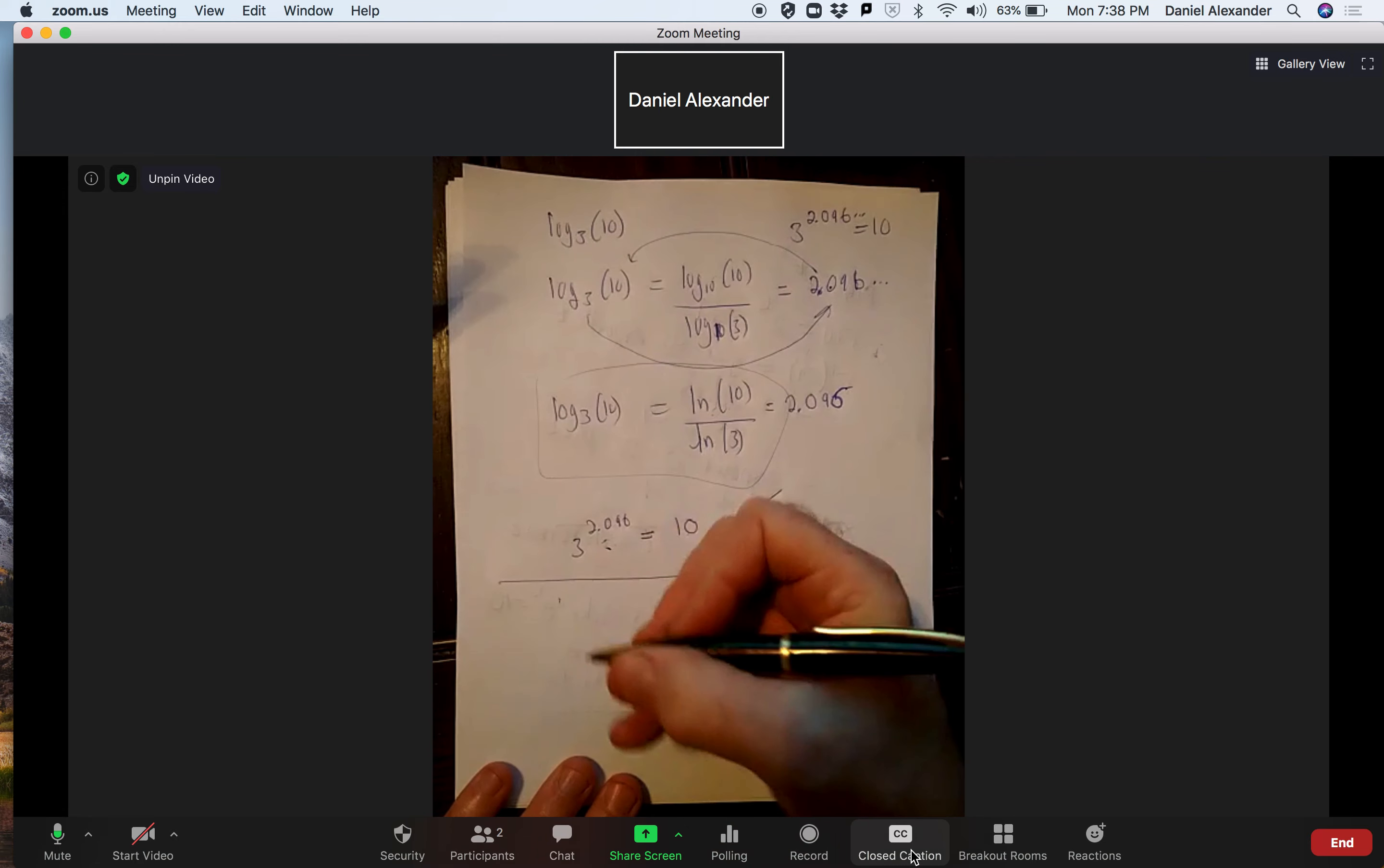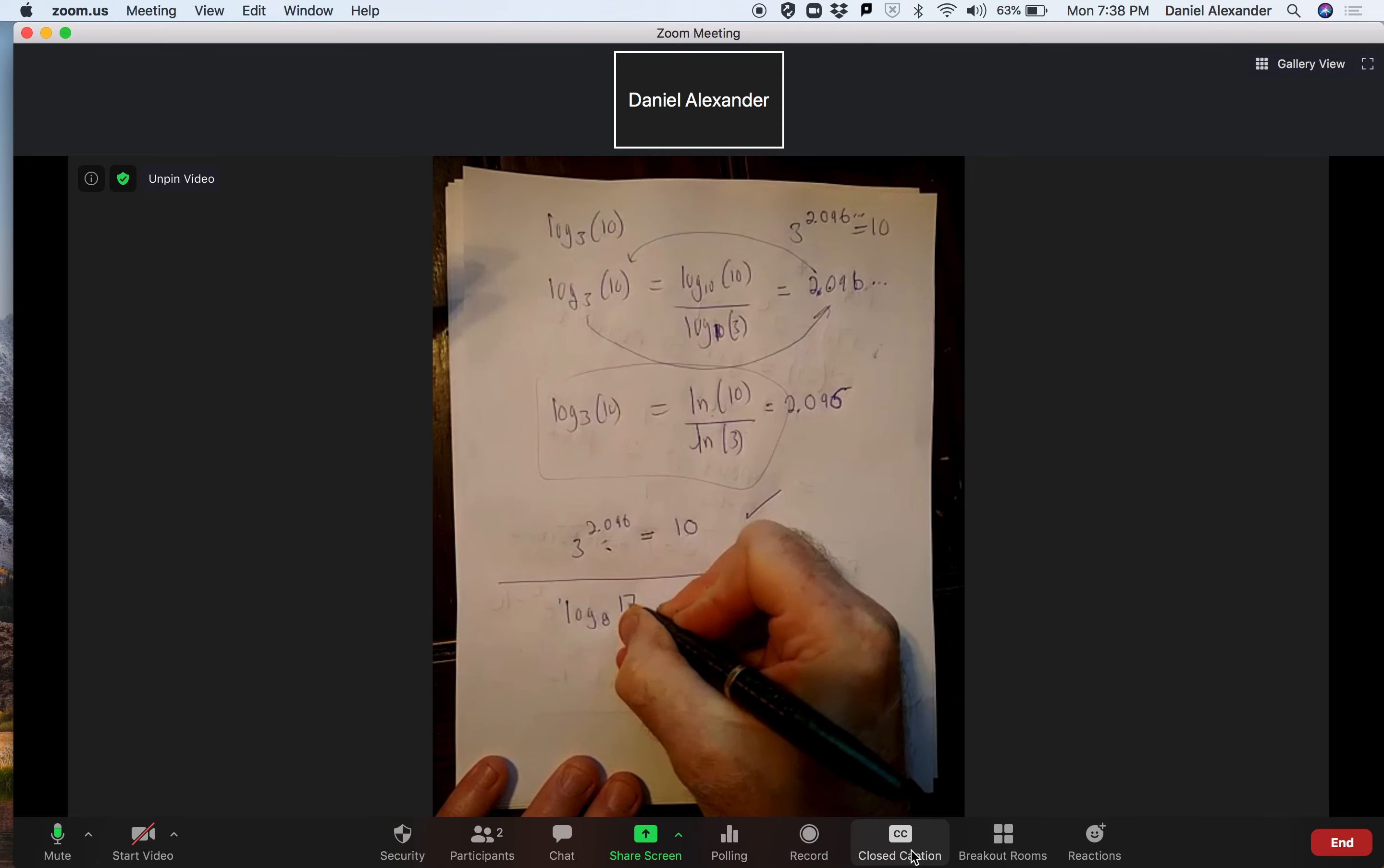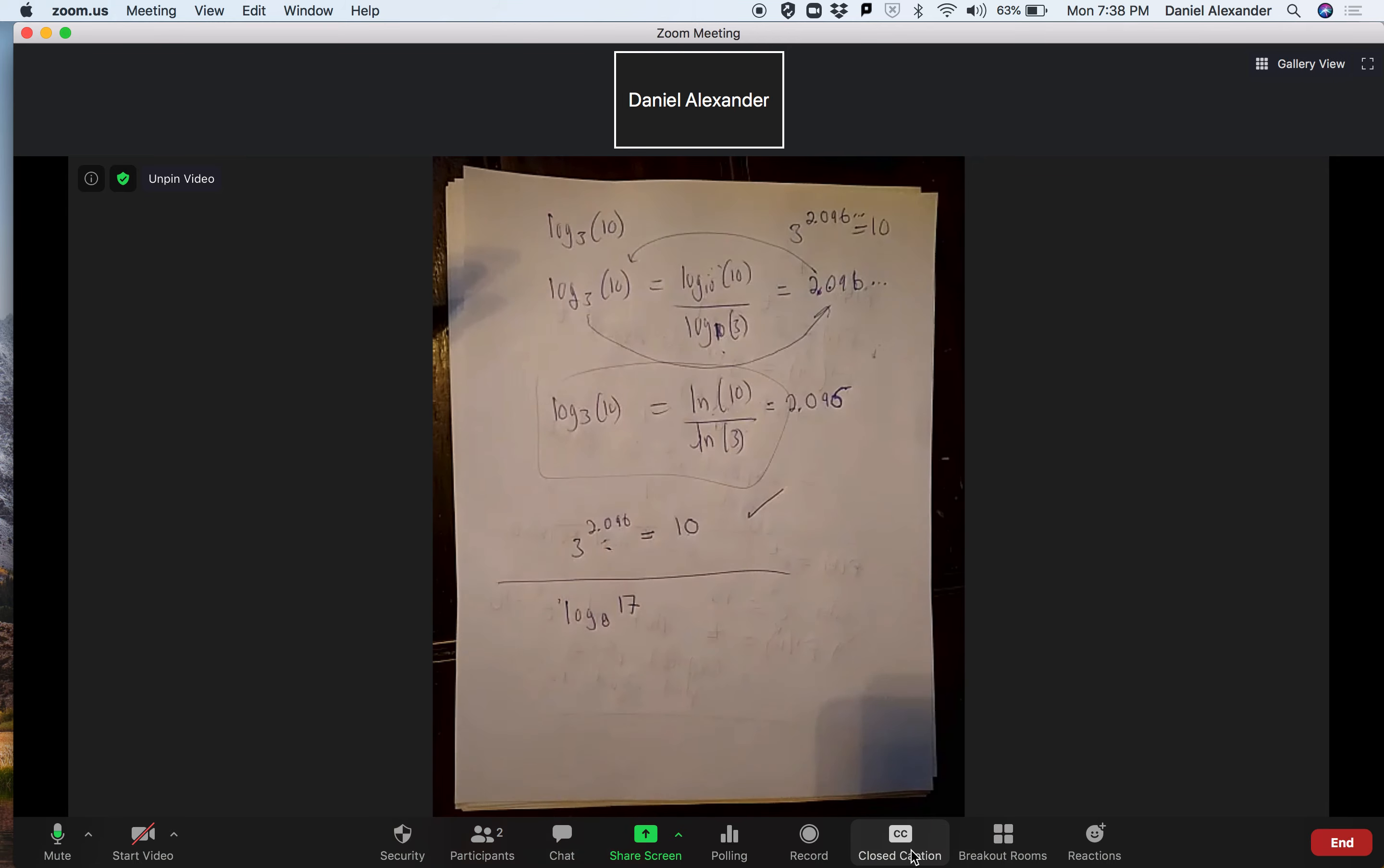So let's do one more. I'll let you do it. It's going to be the log base 8 of 17. And I want you to evaluate it using one of these formulas right here, either convert it to log 10 or log base e. I'll give you a second to do that. Hit pause.